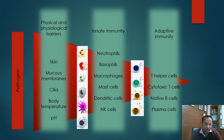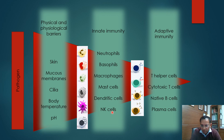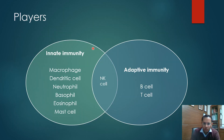This is a pictorial representation of the same concept. Whenever a pathogen tries to enter the body, it faces the first, second, and third lines of defense. The first line is the physical and biophysiological barriers like skin, mucous membranes, cilia, and body temperature. The second line is innate immunity — not very specific — comprising neutrophils, basophils, macrophages, mast cells, dendritic cells, and NK cells. The third line is adaptive immunity with cellular and humoral components: T cells, B cells, plasma cells, antibodies, and cytokines. NK cells overlap both innate and adaptive immunity.